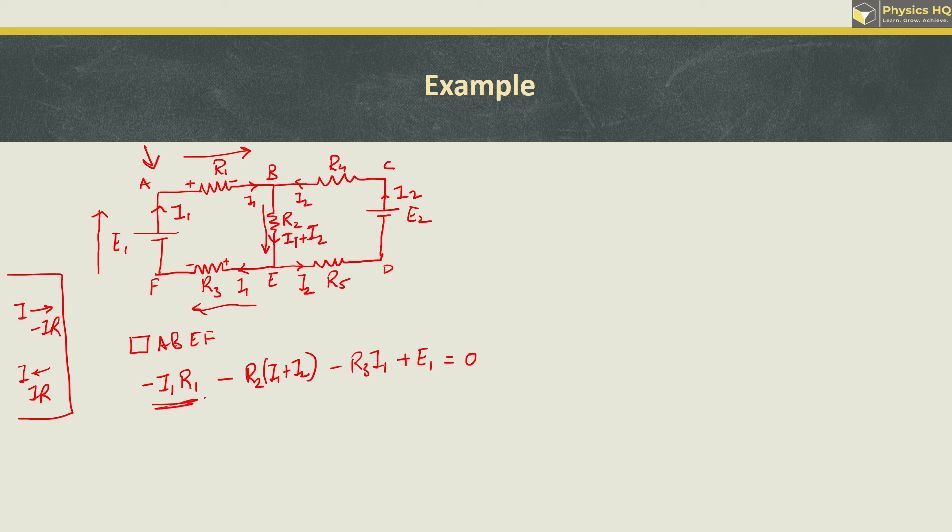We can factor out I1 from R1, R2, and R3. So we have minus I1 times (R1 plus R2 plus R3), then minus I2 R2, plus E1 equals zero. This is your first equation.